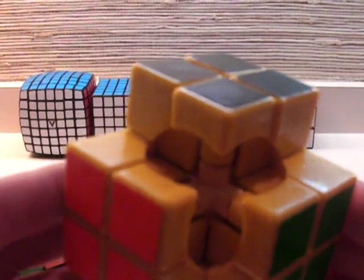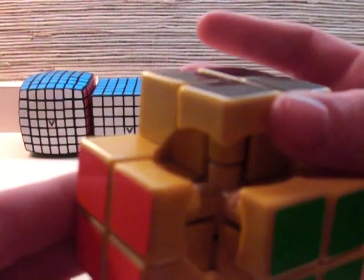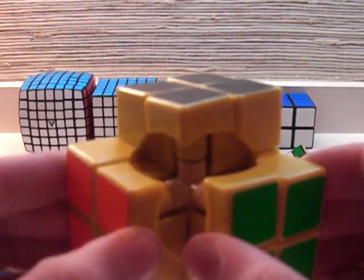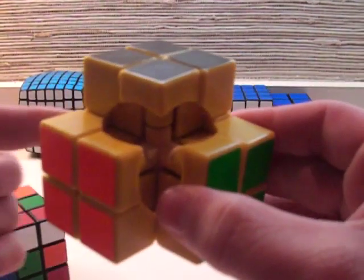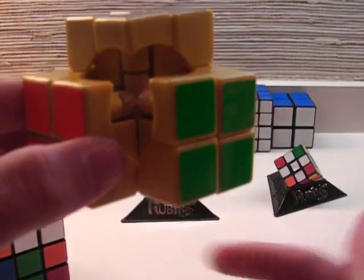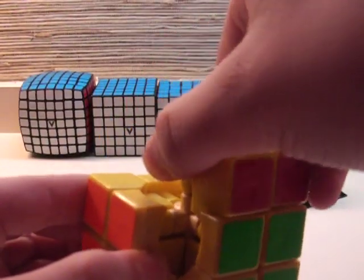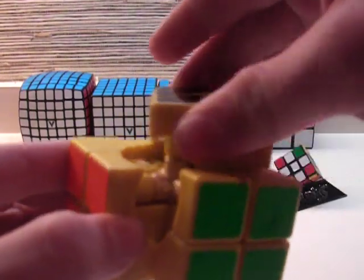As you can see there, the axis has six arms, one going to the up face, to the right, to the front, and then one going to the back, left, and down faces. So what that means is that you can turn each side around a centerpiece.